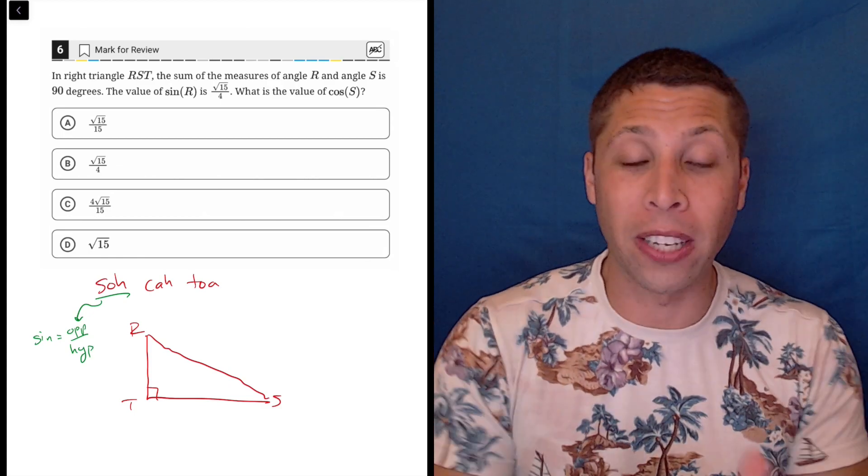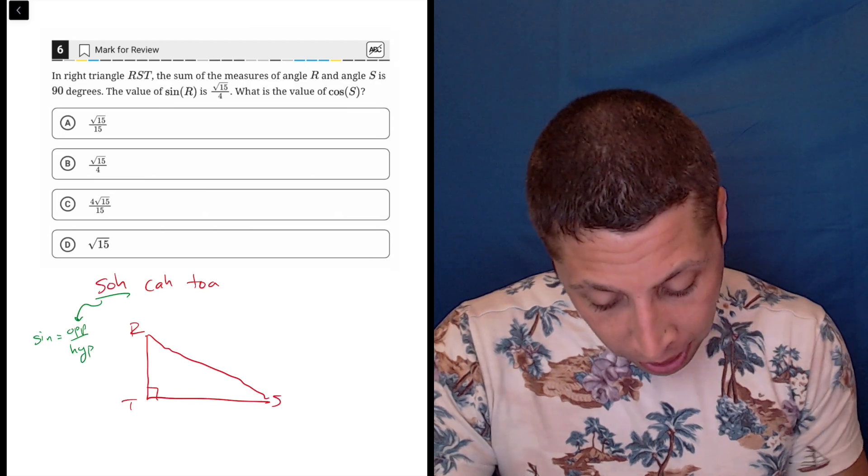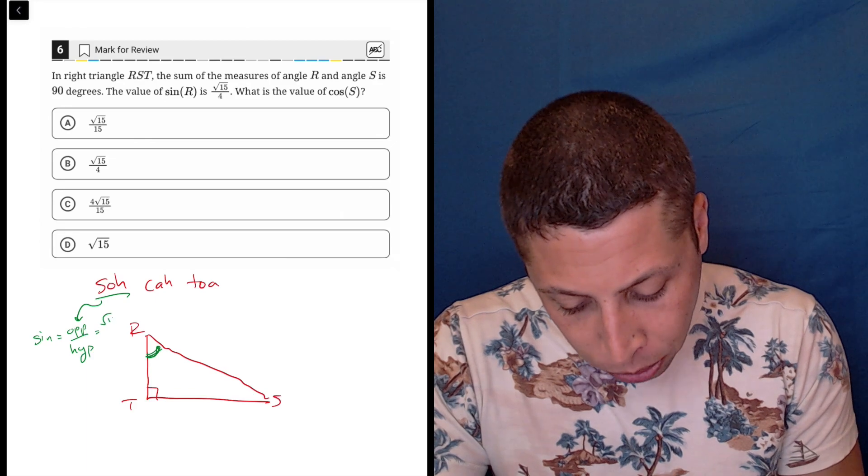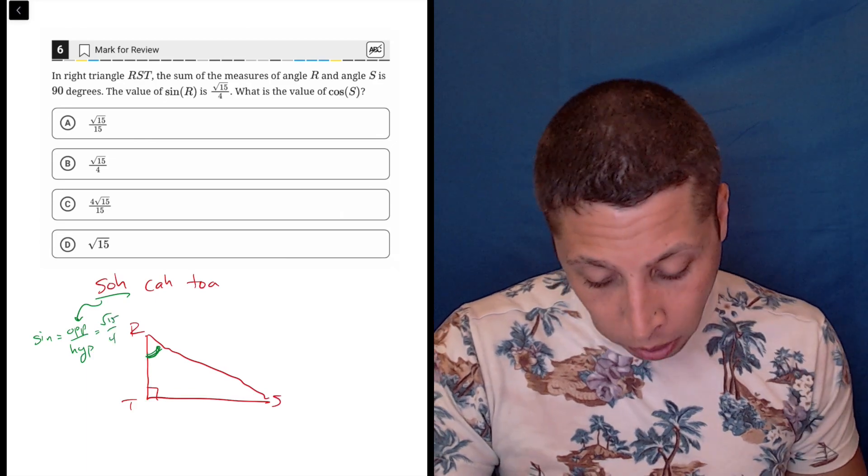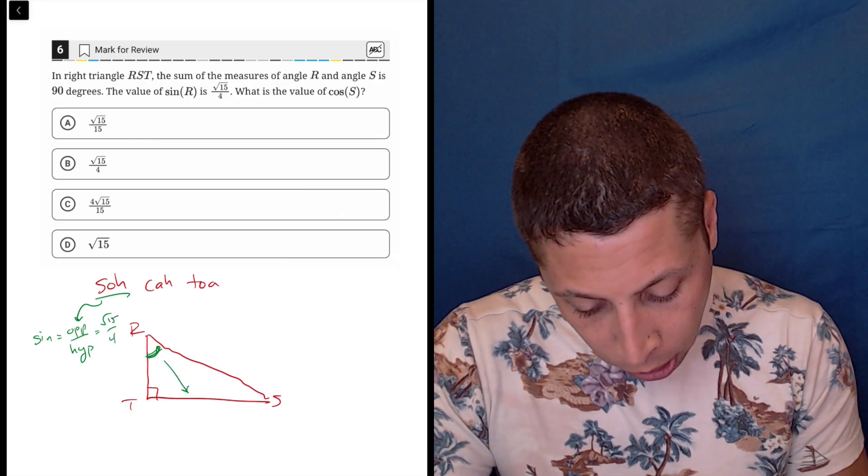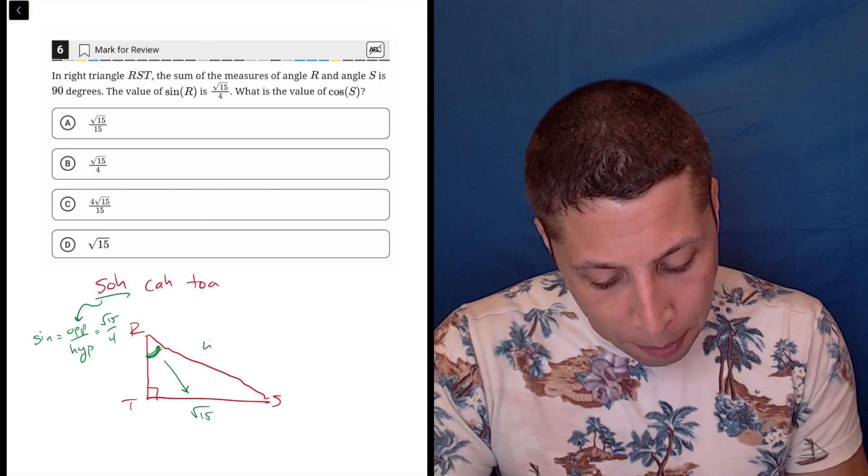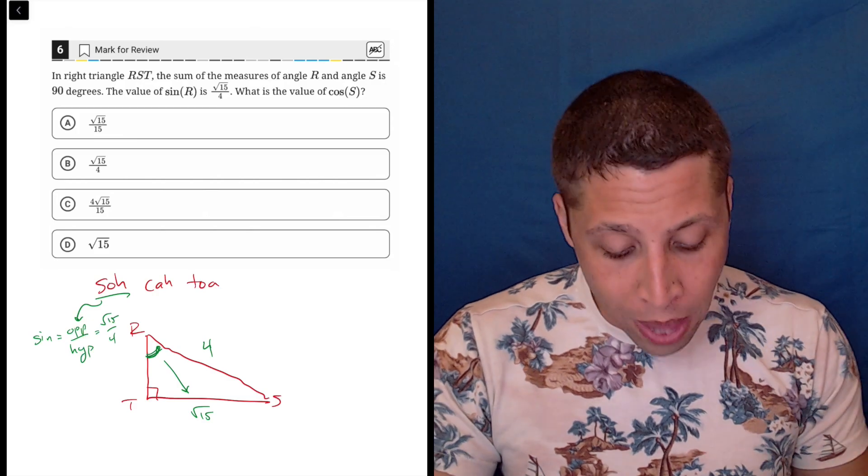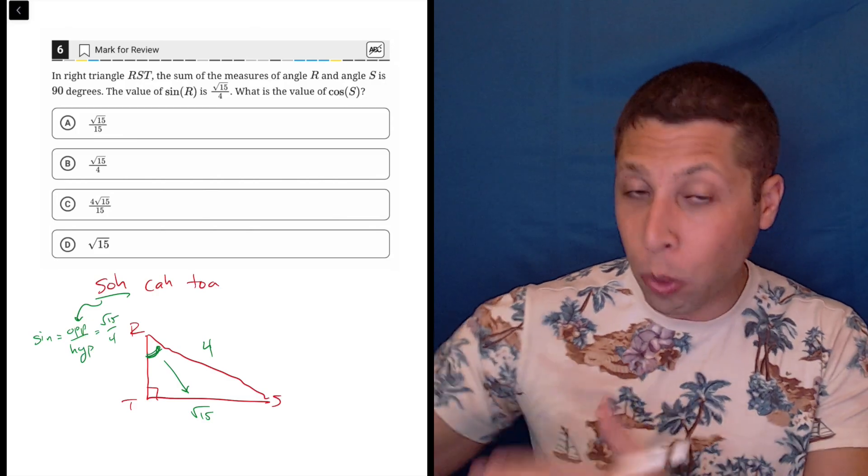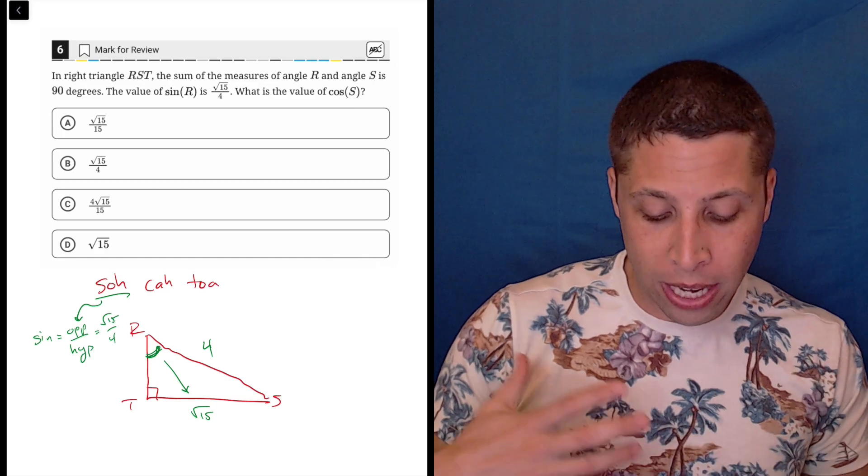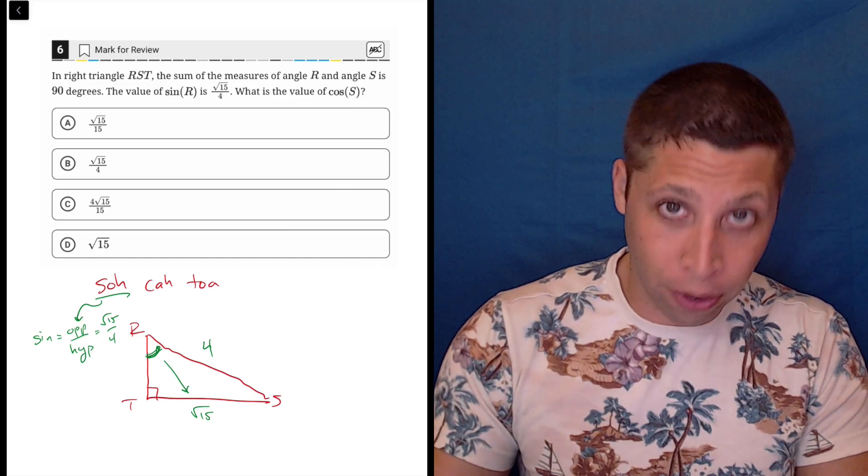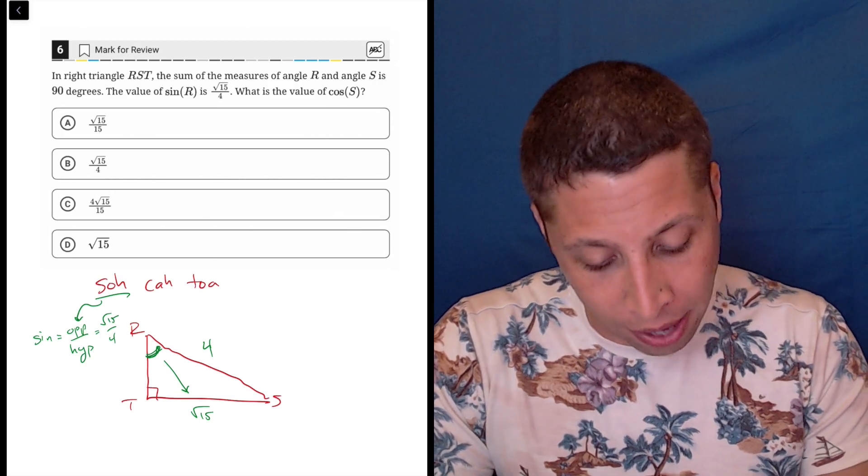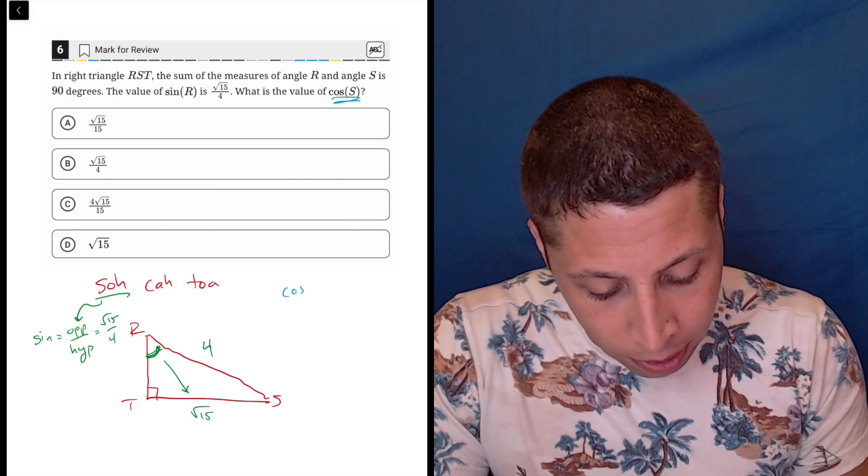All these components mean they're giving us the ratio. So if the sine of R, which is up here, is the opposite over the hypotenuse, then we can match those up with the radical 15 and the 4. So the opposite side is the one across, that's radical 15 here, and the hypotenuse is always the one opposite the 90 degree angle. Now if we wanted to, we could figure out the third side using Pythagorean theorem, but don't get ahead of yourself here. Remember what you're being asked: the cosine of S.